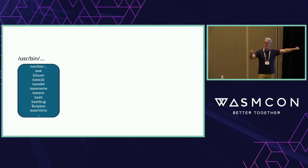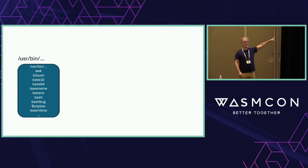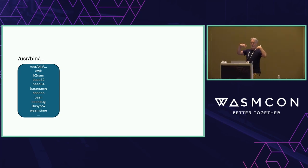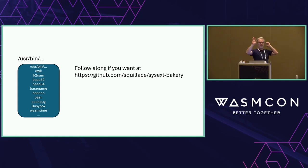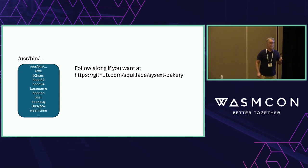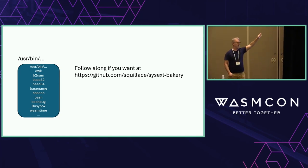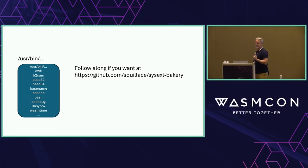In FlatCar and other container or immutable OSes, you only have one user — you're essentially running as root. Whether it's in user/bin or user/local/bin, it doesn't matter. If you want to follow along, this is my repo at Skwalachi sysxed bakery. This is a fork of the upstream FlatCar layer bakery, which has like four or five recipes. I've got like 15 recipes, all of which are WebAssembly related tooling and so forth.